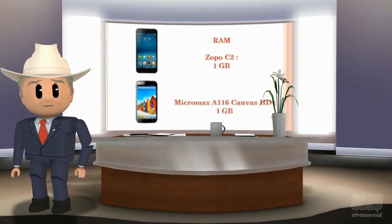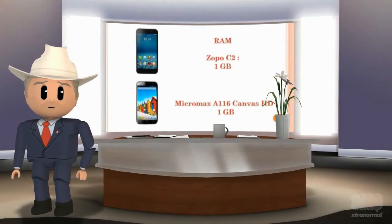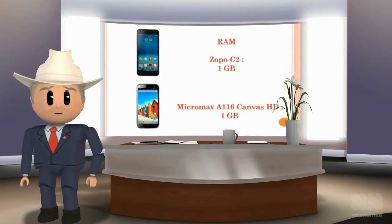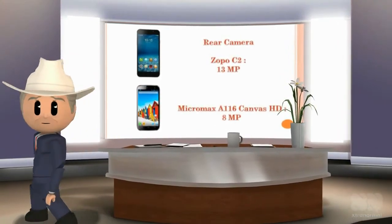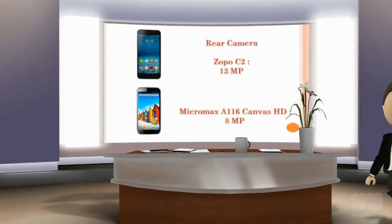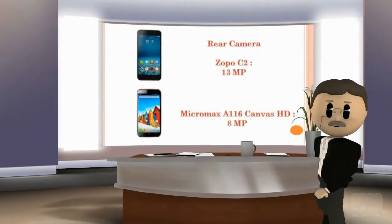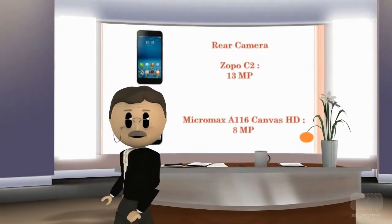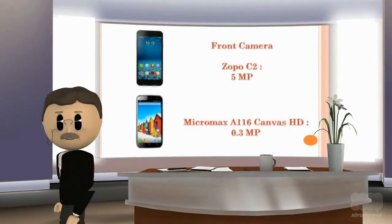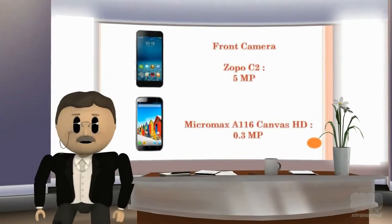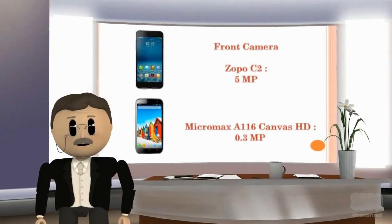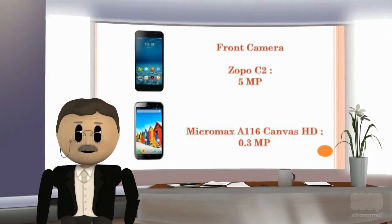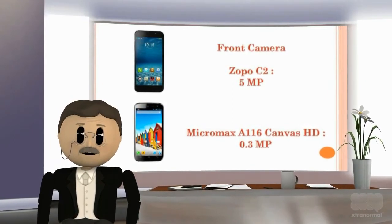RAM of both the Zopo C2 and the Micromax A116 Canvas HD is 1 GB. Rear camera of the Zopo C2 is 13 MP, while the rear camera of the Micromax A116 Canvas HD is 8 MP. Front camera of the Zopo C2 is 5 MP, compared to just 0.3 MP on the Micromax A116 Canvas HD.